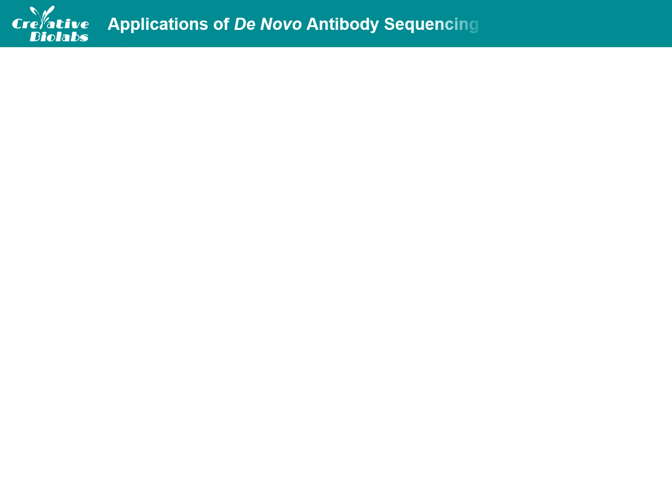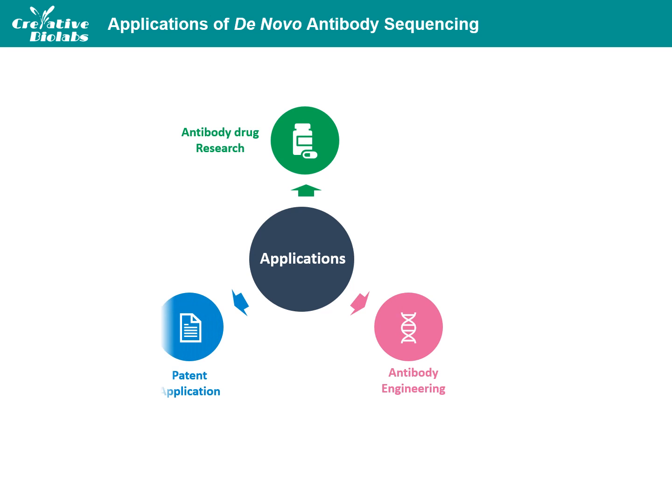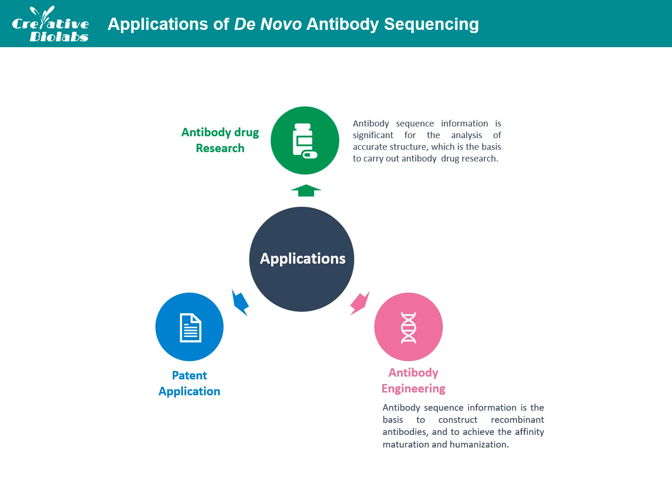DeNovo Antibody Sequencing shows multiple applications in antibody drug research, antibody engineering, and patent application. Antibody sequence information is significant for the analysis of accurate primary structure, which is the basis to carry out antibody drug research. Sequence information is also required to conduct the modified or recombinant expression of commercial antibodies with helpful properties, as well as to achieve affinity maturation and humanization. The sequences of newly developed recombinant or modified antibodies are required to distinguish them from others, and also to apply patents for commercialized applications.